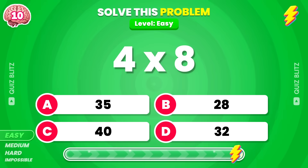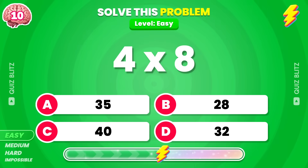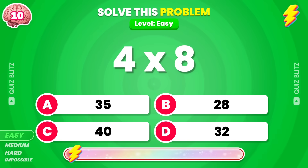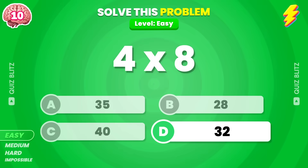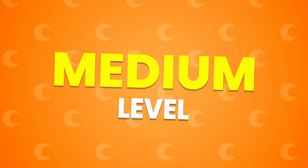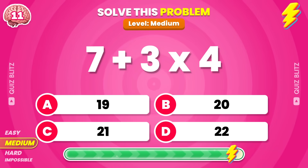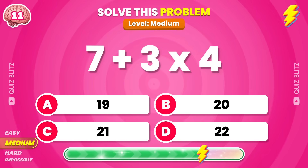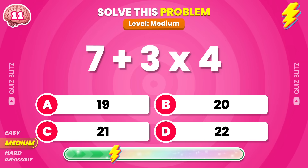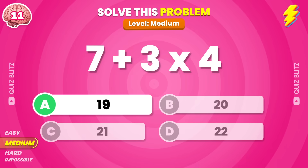4 times 8? 5 times 8? 7 plus 3 times 4? The result is 19!